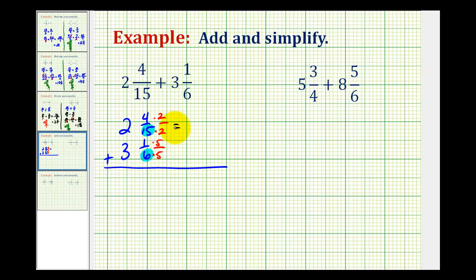So let's go ahead and rewrite this. We're going to have the whole number is two, and this is going to be eight-thirtieths. And here we're going to have three and five-thirtieths.